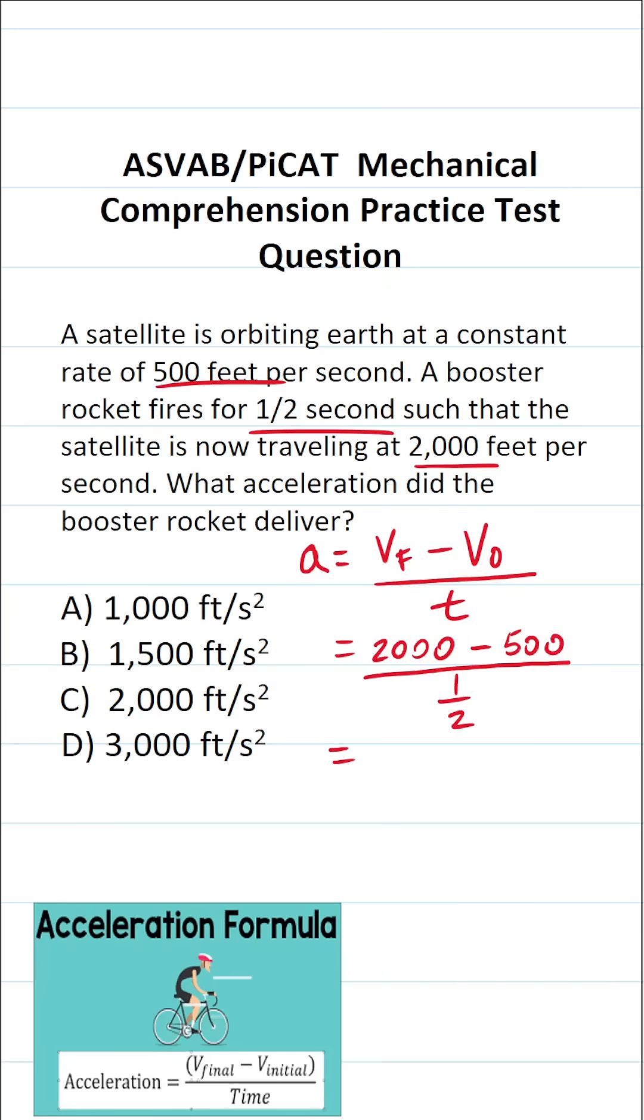Alright, so 2,000 minus 500, you should be able to do mentally. That's going to be 1,500 divided by one half.